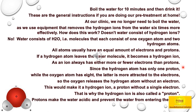Since the hydrogen atom has only one proton, while the oxygen atom has eight, the latter is more attracted to the electrons. So the oxygen releases the hydrogen atom without an electron. This would make it a hydrogen ion — a proton without a single electron. That is why the hydrogen ion is also called a proton. Protons make the water acidic and prevent the water from entering the cells.